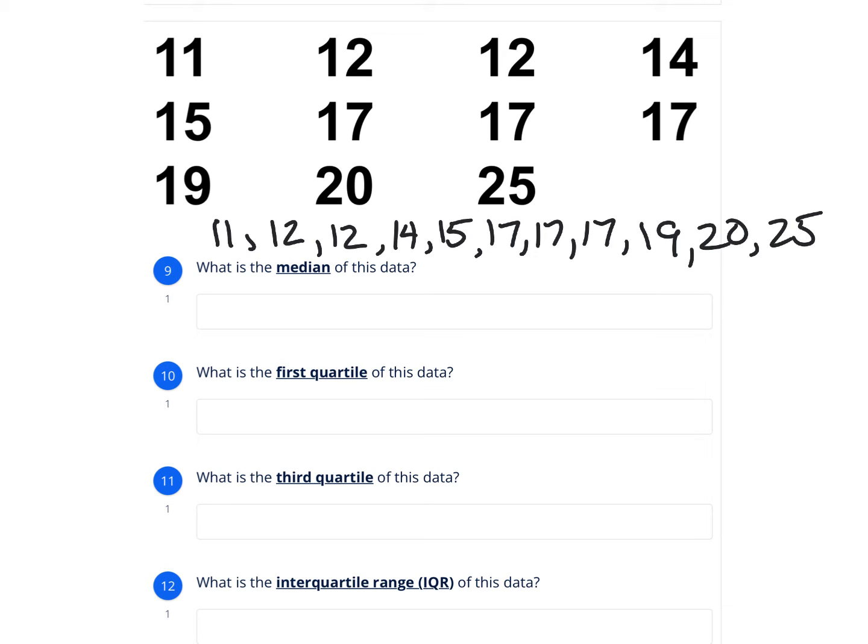So the first question that we're going to find is the median. Median's the middle. So you don't want to cross out your numbers here to find the middle because you're going to be using your numbers. So a lot of times what I like to do is little dots. So I'm going to go back and forth until I get to the middle of my data, and that middle is called the median. So here I'm going to circle it.